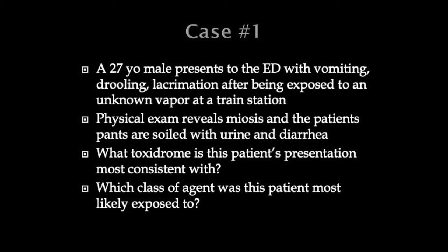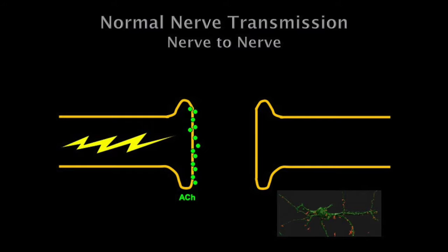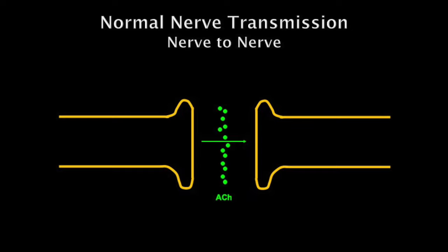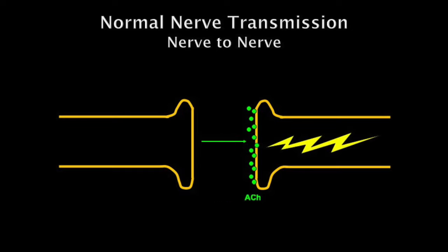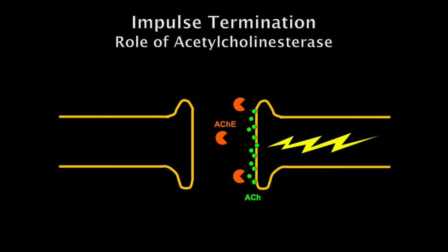What class of agent was this patient most likely exposed to, given the terrorist-sounding incident? Organophosphate. We call it cholinergic, but we should really call it muscarinic because it acts on both nicotinic and muscarinic receptors. With nicotinic receptor overdose, you initially develop tachycardia and hypertension, and then — like the poison hemlock story — you become paralyzed as those nicotinic receptors are overstimulated. Normally, acetylcholine is released presynaptically, crosses the synaptic cleft, stimulates postsynaptically, and then acetylcholinesterase — the little Pac-Man guys — chews up the acetylcholine so that stimulation stops.